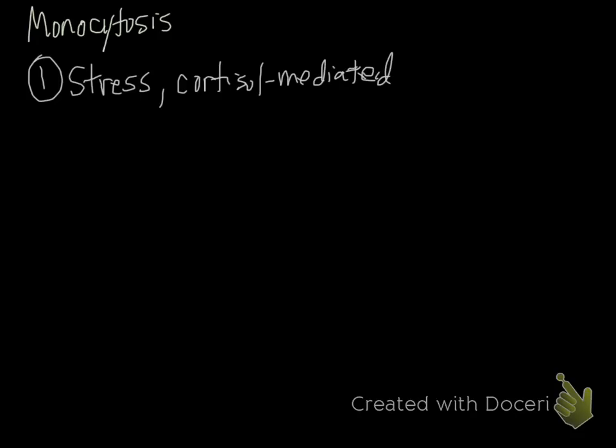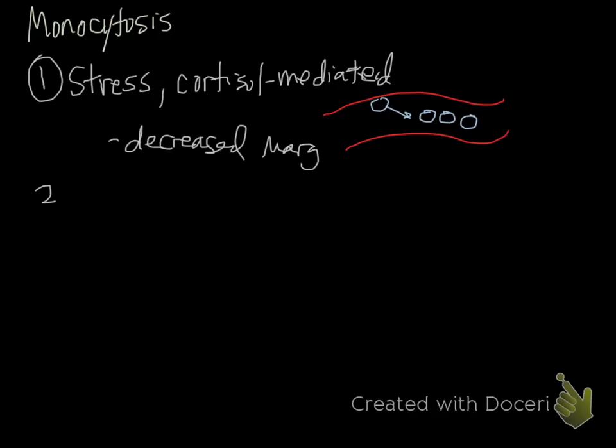With neutrophils, there were two causes for the increase: decreased margination and actual release from the storage pool. Because monocytes don't have a storage pool, the only real cause that we see of monocytes increasing is a decrease in margination, meaning you have more monocytes in the circulating pool. That's due to downregulation of integrins and adhesion molecules. So that cause, again, is decreased margination or shift from the marginal pool to the circulating pool.